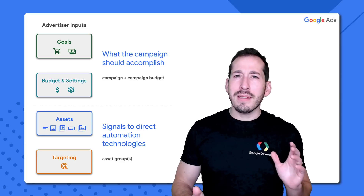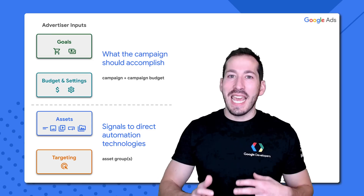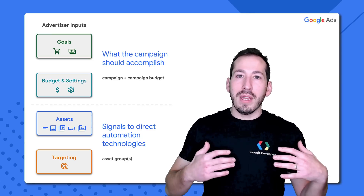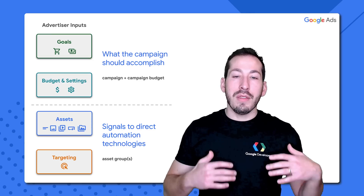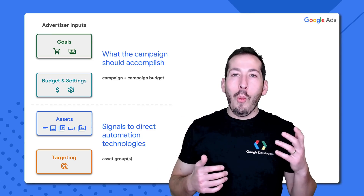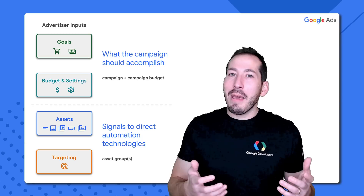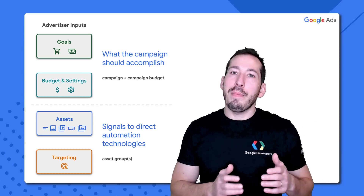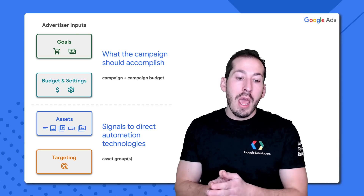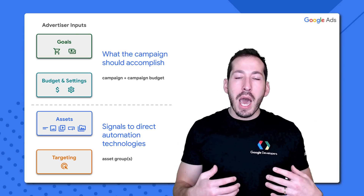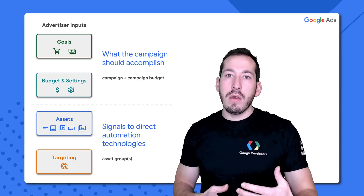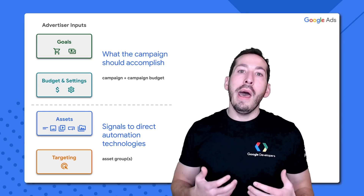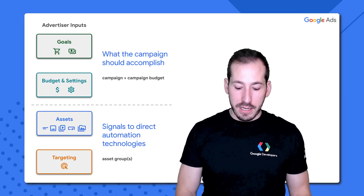So if we break this down, we're going to start getting into the API right now. There's really two things that are going on here. At the top: what is this campaign looking to accomplish? And this is really going to be set by your campaign and your campaign budget. And then on the bottom, we have signals to direct the automation technology, and this is really going to be held within your asset group.